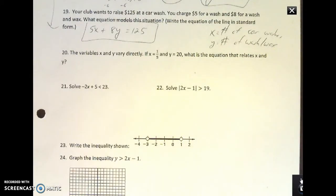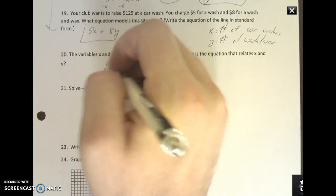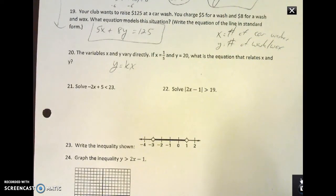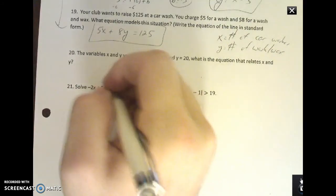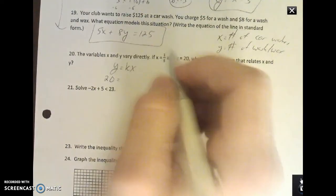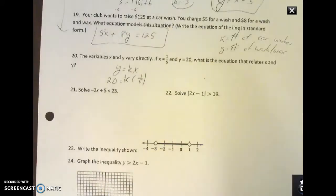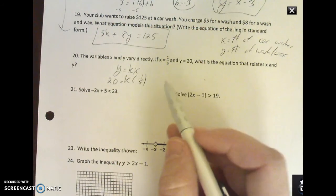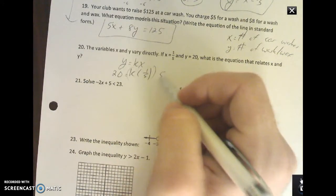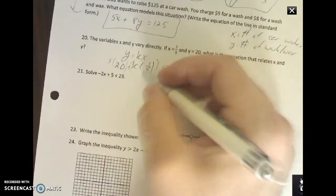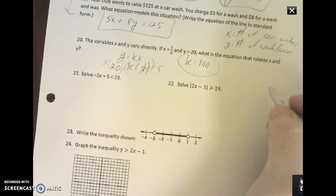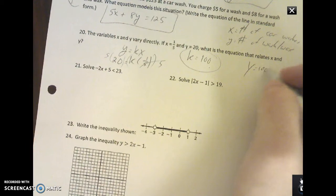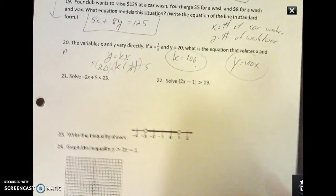Number 20: the variables x and y vary directly. If they vary directly, the equation is y equals kx. They're giving you an x and y, they want you to solve for k, and then what's the equation that relates x and y. So plug things in: 20 goes into the y, k is I don't know, and x is one-fifth. How do I get rid of a fraction? Multiply by the reciprocal. So multiplying both sides by five, k equals 100. Now that I have my constant of variation, I can do y equals 100x. That's your equation.